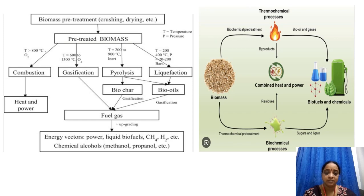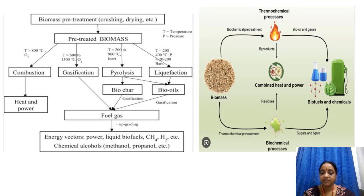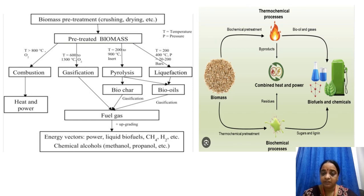The energy vectors using biomass or bioenergy include power, liquid biofuels, methane, hydrogen, chemical alcohols like methanol and propanol, thermochemical processes, bio-oil, and gases. The byproducts feed into combined heat and power, and residues are also processed through combined heat and power. Biofuels, chemicals, sugars, and lignin are produced via thermochemical and biochemical pre-treatment. The upper part of the diagram shows the thermochemical process and the lower part shows the biochemical process.